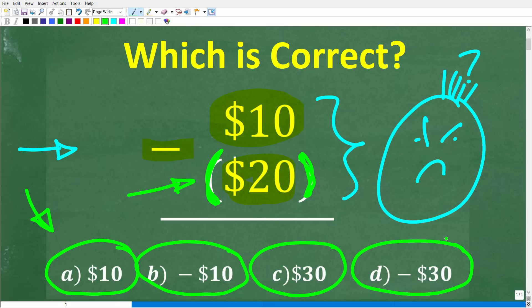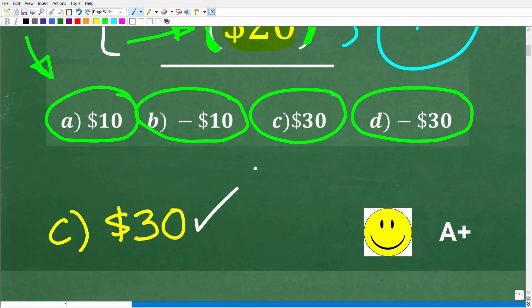All right, so once again, no calculators. But if you think you know the answer, go ahead and put that into the comment section. I'm going to show you the correct solution in just one second. Then, of course, I'm going to explain these parentheses and how to answer this problem. All right, so the correct answer is C, $30, or a positive $30.